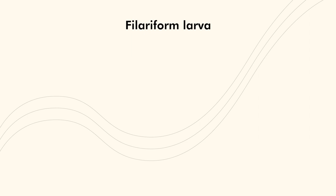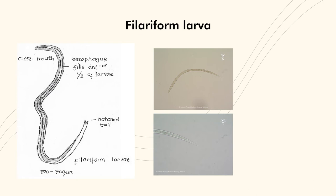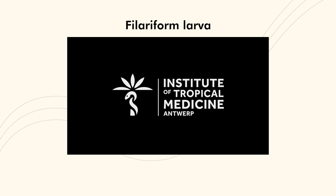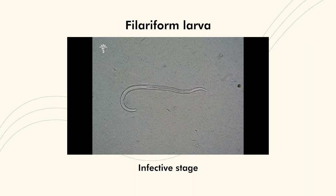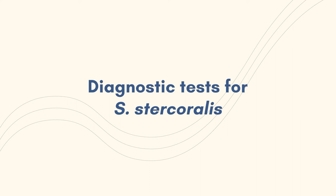The filariform larvae, also known as L3, are longer and more slender, measuring 630 µm in length and 10 µm in breadth. These larvae are the infective stage of the parasite.